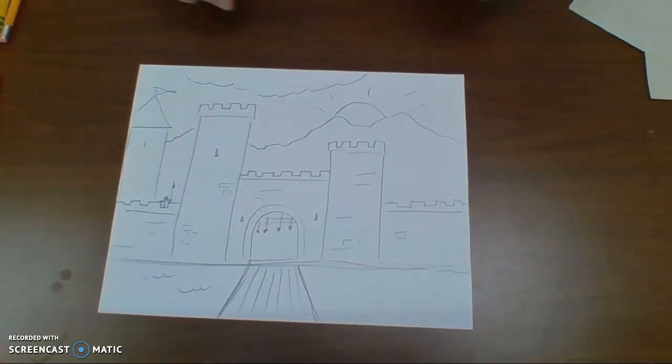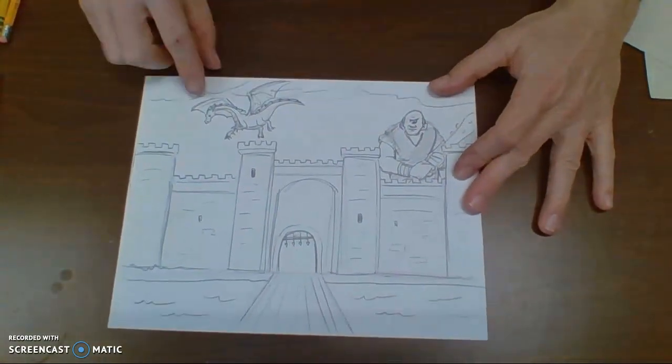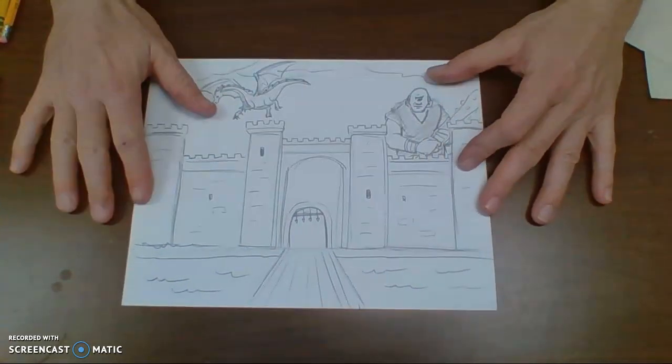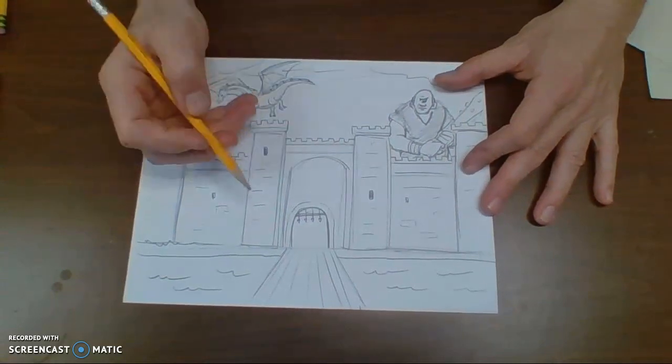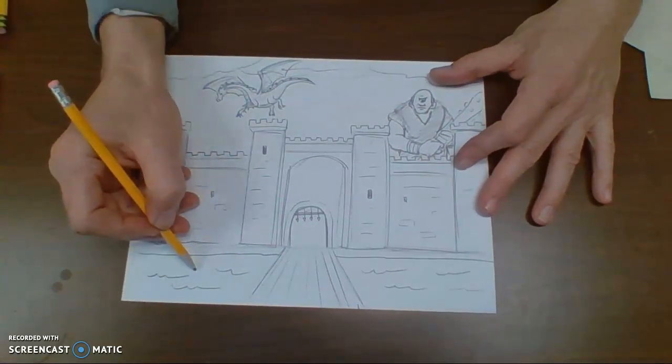You can even get really crazy and start adding things in the background like I did over here on this finished one. I put a giant back here. I put a nice little dragon flying up in the sky. You can put whatever else you want to. Now, you can see that with a pencil, you can get real small and draw lots of little details. I could draw a little fishing boat.